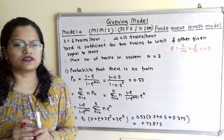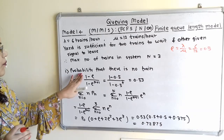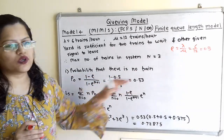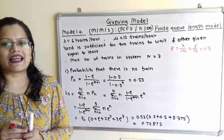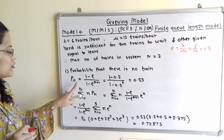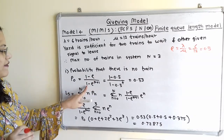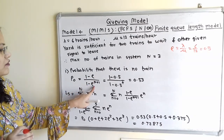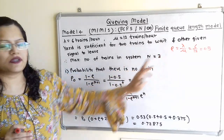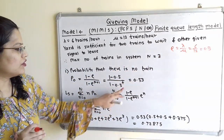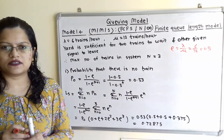First, we find P(0) — the probability of no train in the system. P(0) = (1 − ρ) / (1 − ρ^(N+1)) = (1 − 0.5) / (1 − 0.5^(3+1)) = (1 − 0.5) / (1 − 0.5^4). Solving this gives P(0) = 0.53.